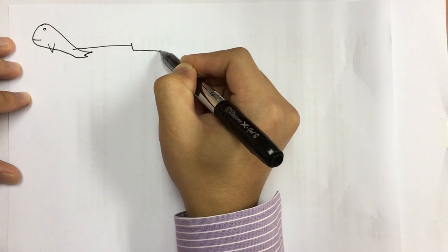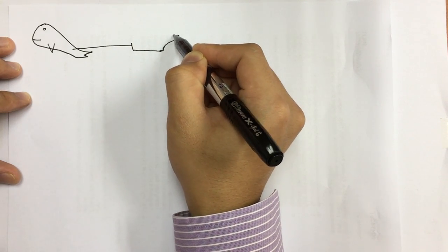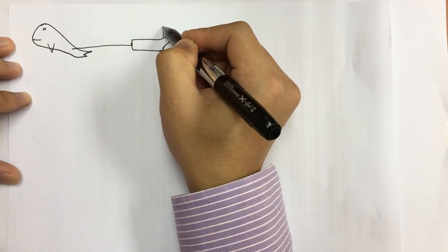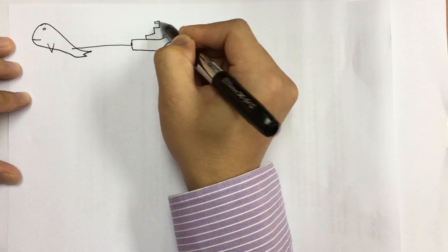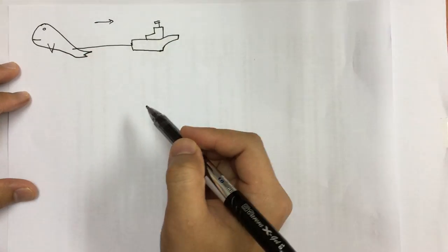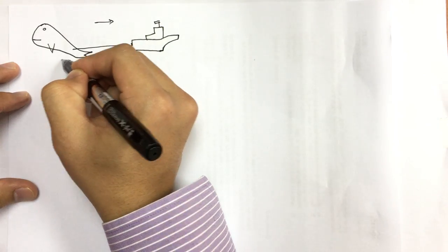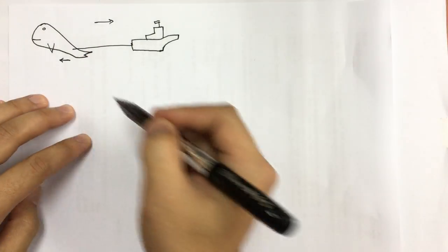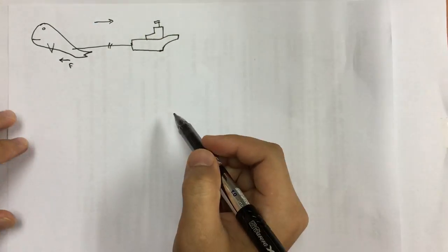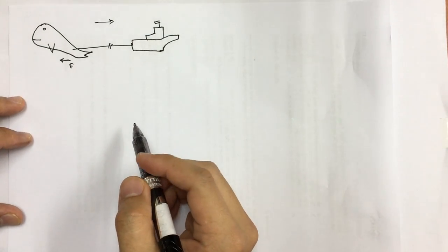We have the tugboat over here and this is the flag. Here we have the velocity to the right, and we have the resistance force here by the whale. And this is the rope. For this particular part of problem, we can use the momentum equation.